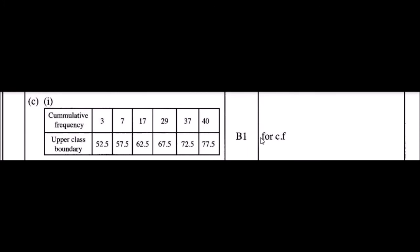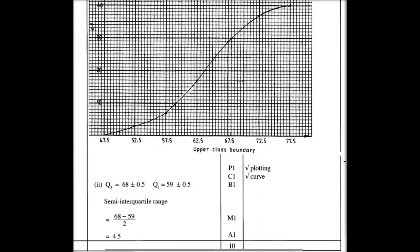Here you get one mark for preparing the table or creating the cumulative frequency. So you get one bonus mark. So in this section, you get one mark for plotting, that is using the right scale and so forth. You get another mark for the curve, the smoothness, and if it fits the points that you have identified. Then you get a bonus point when you identify the lower quartile and the upper quartile. You get a method mark when you use the semi-interquartile range formula. That is, how you do it. And finally, you get one mark for the answer, which is 4.5, totaling to 10 marks.